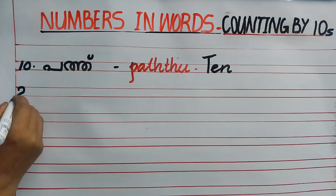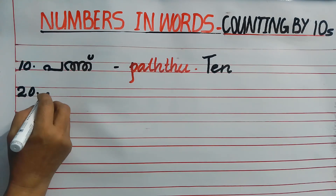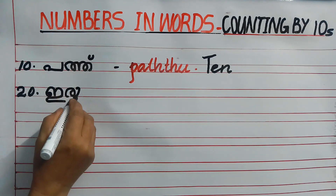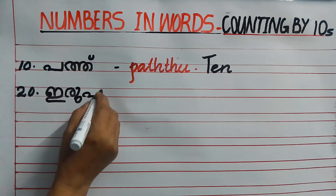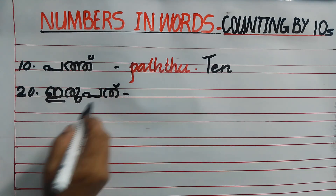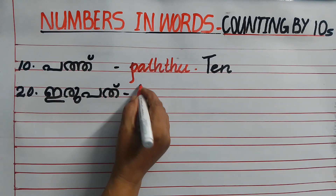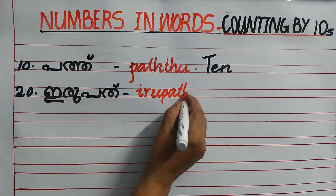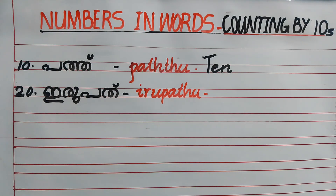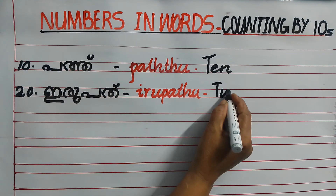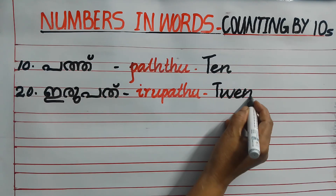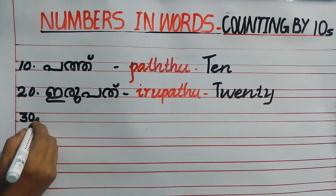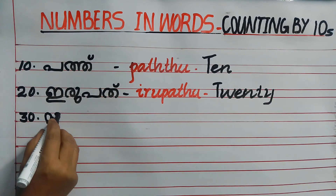Twenty. Irupathu. Irupathu. E. RU-RA plus the symbol of U — Irupathu. Irupathu together.